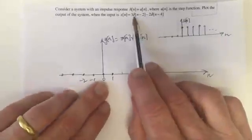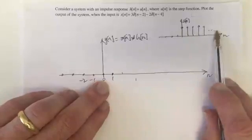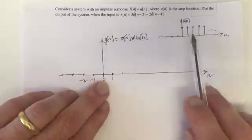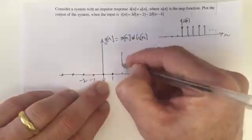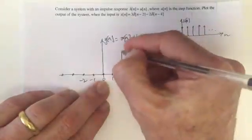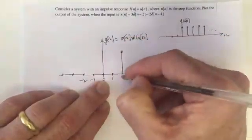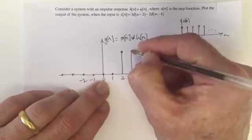So at 2 an impulse happens of height 3, which means the impulse response is going to come out of our system. So out of our system starting at time 2 we're going to have 3 times the step function. And so at 2 that's the case and at 3 that's the case.